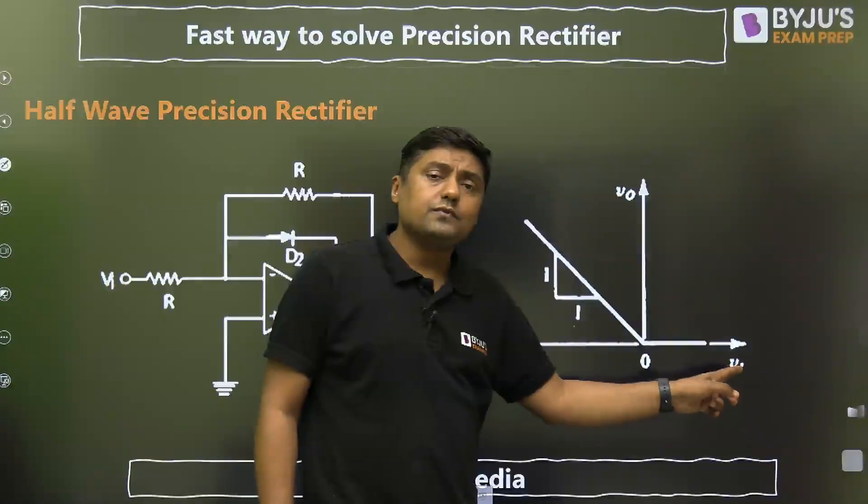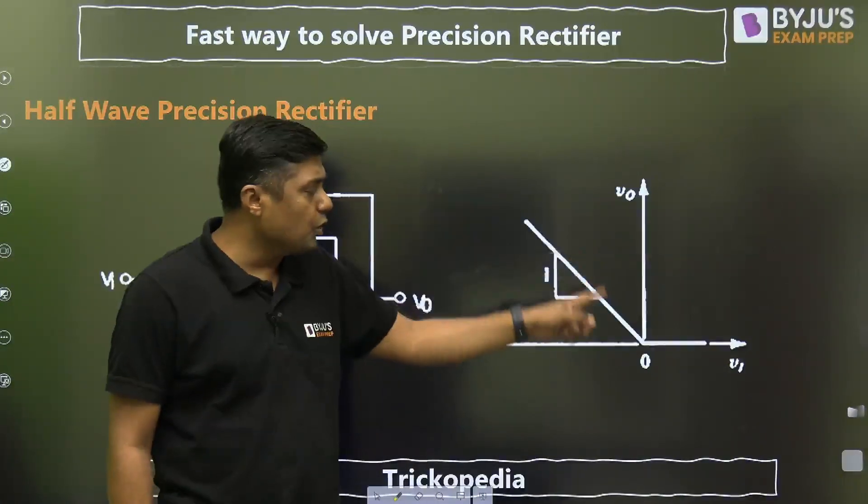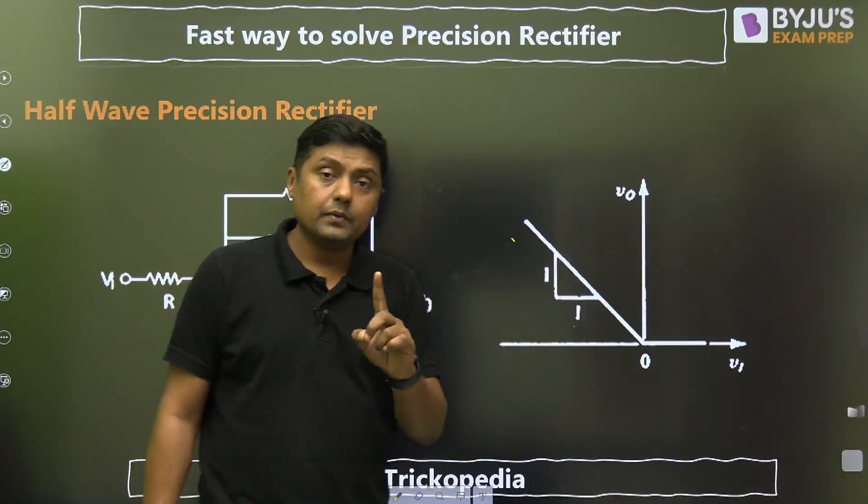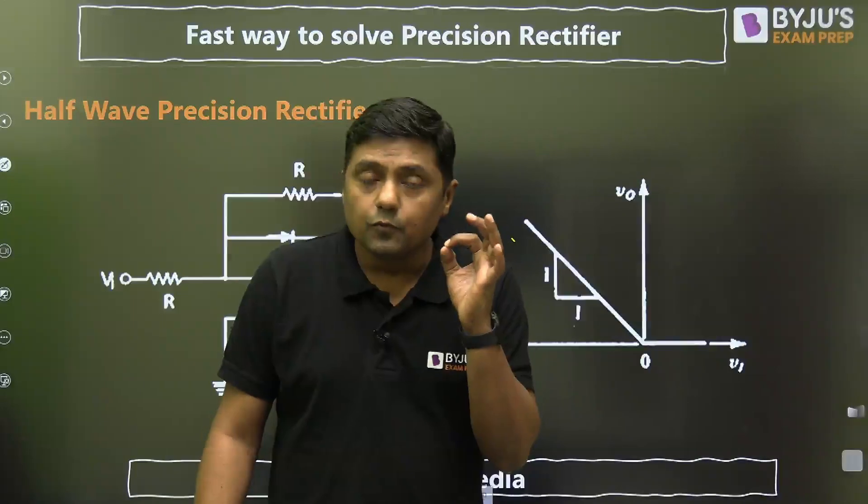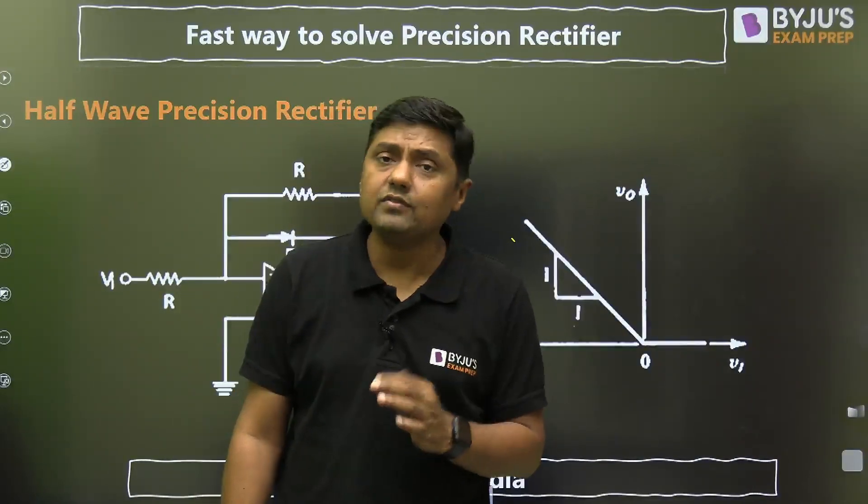For positive half, we are getting 0 output. For negative half, what is the output? Positive. And what is the slope of this line? 1. So, that is the V0 versus Vs curve for precision half-wave rectifier.